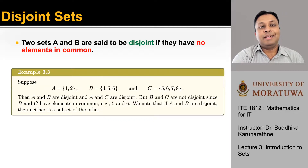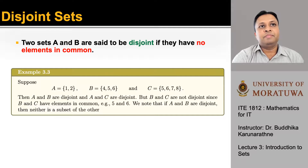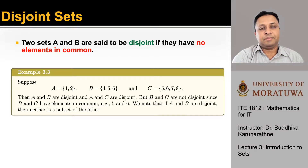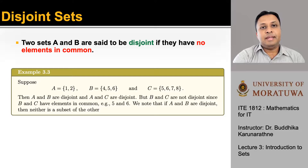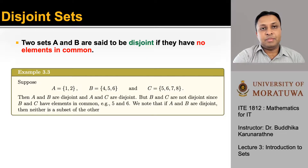Now let's look at what is meant by disjoint sets. Two sets A and B are said to be disjoint if they have no elements in common. For example, suppose A is {1, 2}, B is {4, 5, 6}, and C is {5, 6, 7, 8}. Then A and B are disjoint, and A and C are disjoint, but B and C are not disjoint because they share elements five and six. If A and B are disjoint, then neither is a subset of the other.